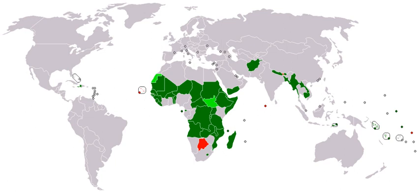Over the last few decades, global population growth has largely been driven by developing countries, which often have higher birth rates than developed countries. According to the United Nations, family planning can help to slow population growth and decrease poverty in these countries.